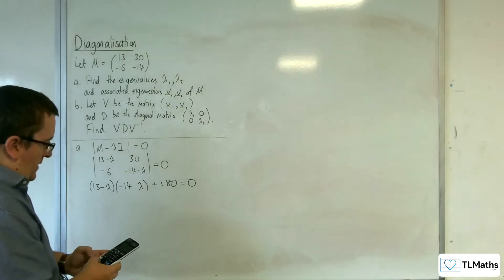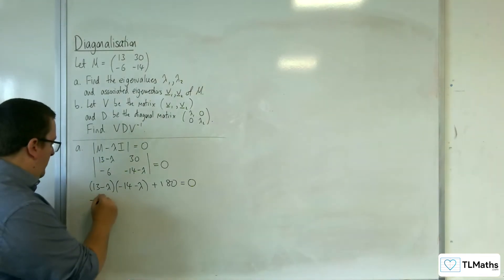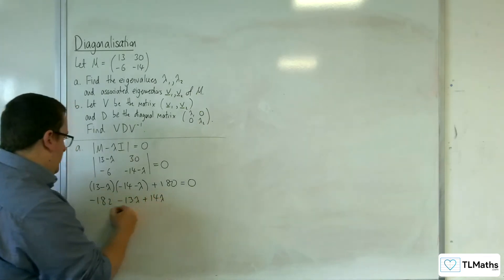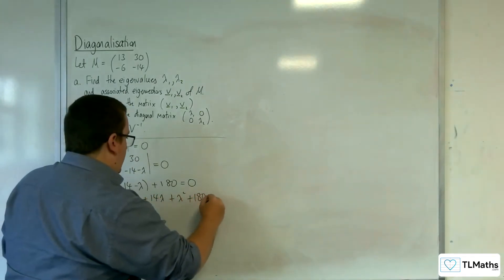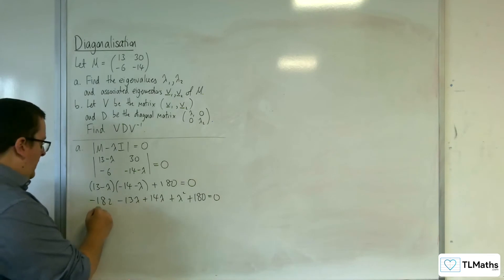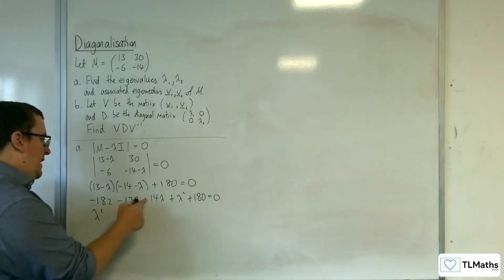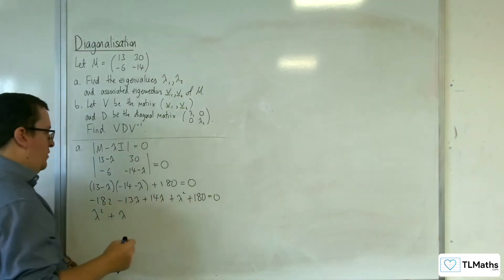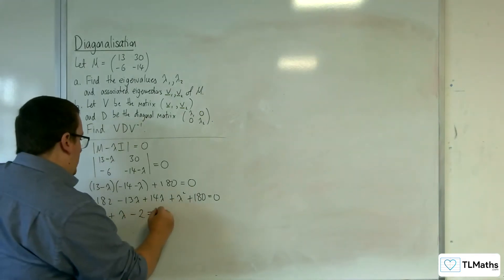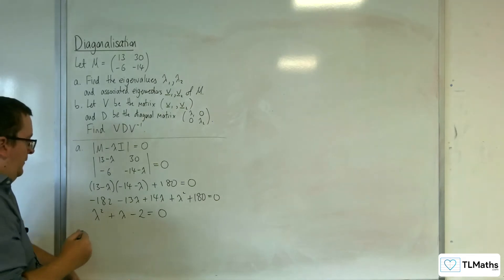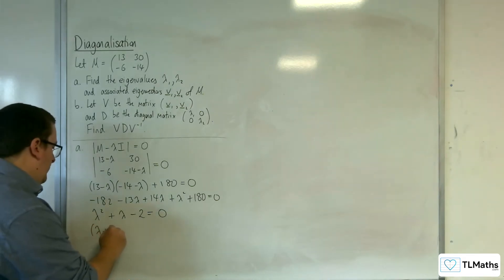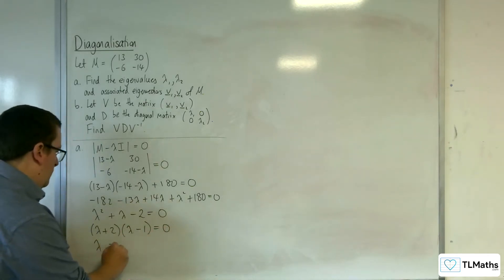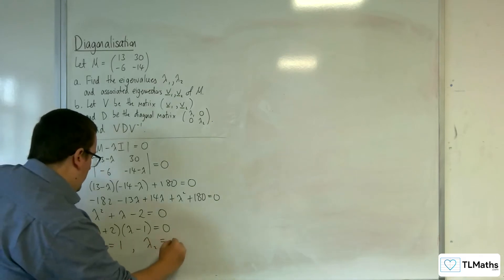So 13 times 14 gives minus 182, take away 13 lambda, plus 14 lambda, plus lambda squared, plus 180 equals 0. So we've got lambda squared plus lambda minus 2 equals 0, which factors as lambda plus 2, times lambda minus 1 equals 0. So lambda 1 equals 1 and lambda 2 equals minus 2.